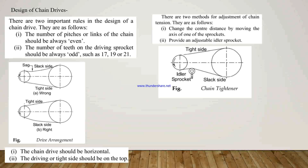Horizontal chain drives are always preferred because the lower strand should be the slack side — this is opposite to that of belt drives. Keeping the driving or tight side on top has advantages: the tendency of the sagging portion of the chain to engage additional teeth on the sprocket is prevented, and in chain drives with very long center distances, contact between the upper and lower strands is avoided. The tight side should be at the upper portion and the slack side at the bottom.